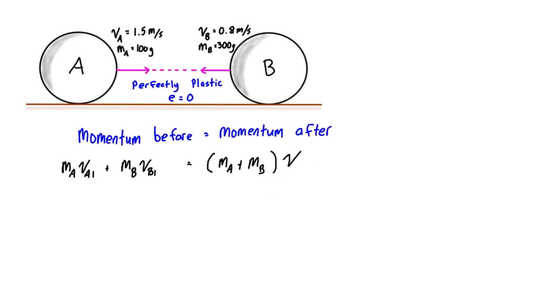Let's fill out the information we have. The mass of A is 100 grams, so that's 0.1 kilograms. The velocity is 1.5 meters per second. Plus the mass of B, 300 grams, so that's 0.3 kilograms, times the velocity of B, which is negative 0.8 meters per second. That's because we're defining the right as the positive direction.